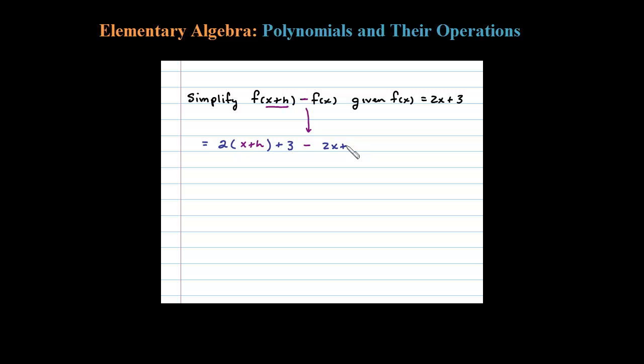f(X) is 2X + 3. Now let's remember, when we subtract a function, we have to subtract all the terms. To remind me to distribute the negative, I have to put this in parentheses.